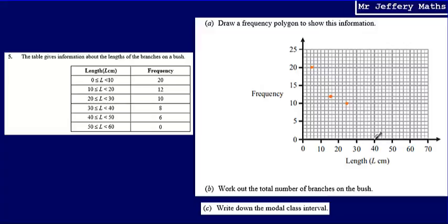Then 30 to 40 with 8, which is just there. Then 40 to 50 with 6, so 40 to 50 with 6, which is just there. And then 50 to 60 was 0, so just there.